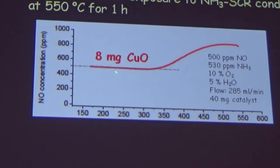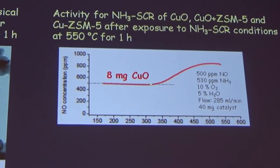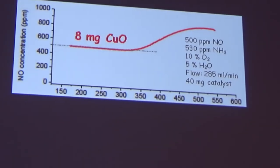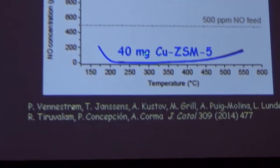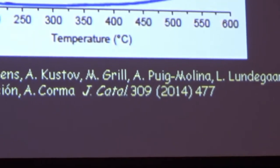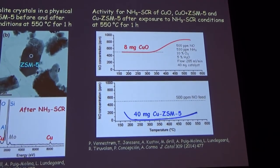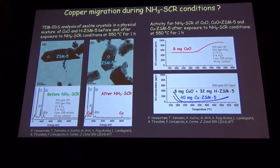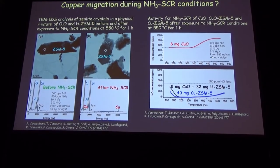If you measure activity by taking just the copper oxide powder and exposing it to ammonia SCR conditions at 500 ppm, we see that nothing happens—ammonia is oxidized, so no SCR activity at all. However, if we take an ion-exchanged zeolite, in this case copper ZSM-5 produced by conventional methods, we see significant SCR activity already at low temperatures. And for the physical mixture, the performance is very similar to the aqueous ion-exchanged zeolite.